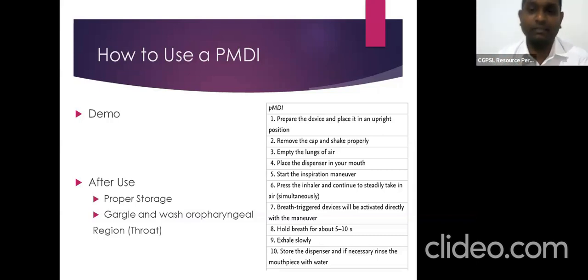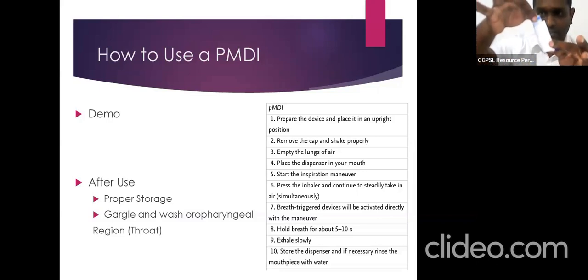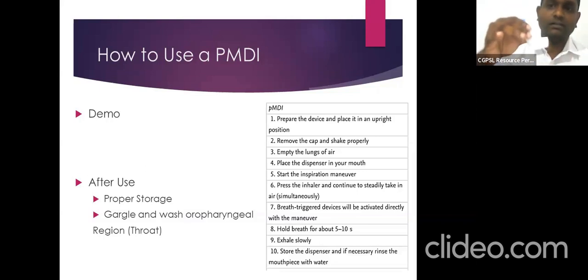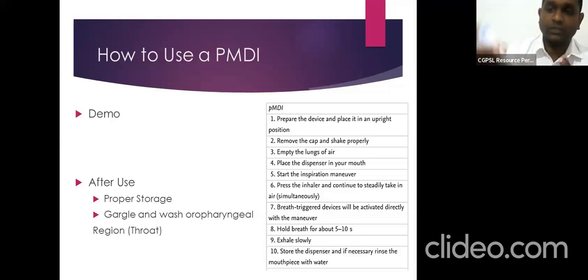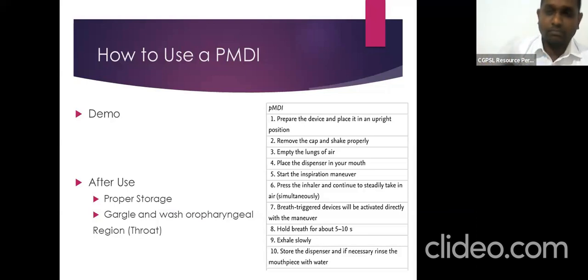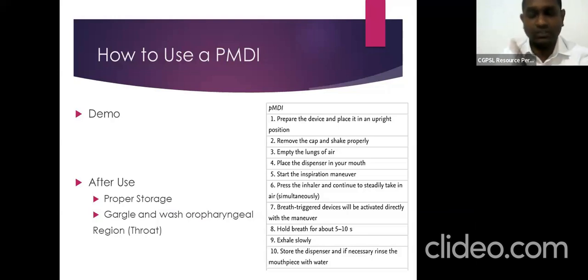This is a simple mistake that patients make. For cleaning the device, you should not remove any part — not the canister or anything. Just wipe with a dry cloth, close it, and keep it. Before using the device, you should check inside the mouthpiece for any substance, because small insects can get in. It's helpful to keep it in a tightly sealed container after usage. Storage is very important after use, and gargling the throat is something most patients miss.